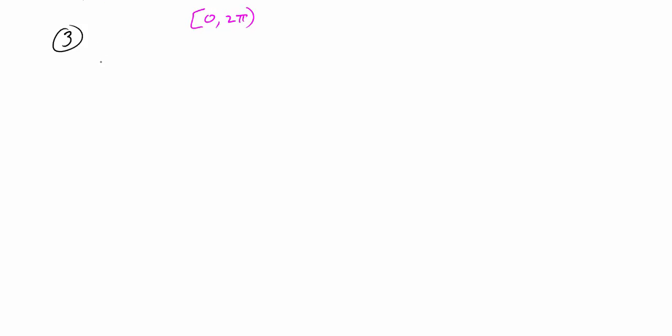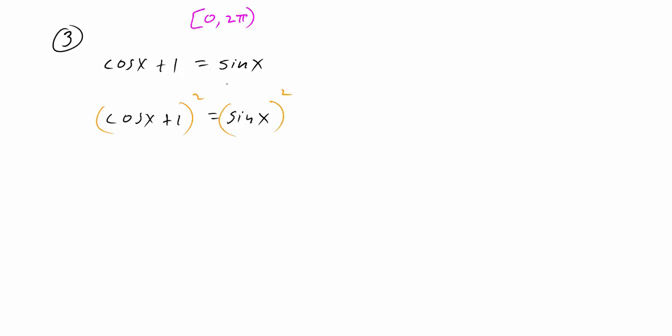Our third example, again on the interval zero to two pi: cosine of x plus one equals sine of x. We have two different trig functions. Neither one is squared, so we can't directly use a Pythagorean identity. What we can do is square both sides of the equation.